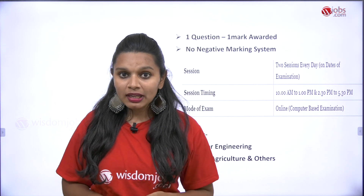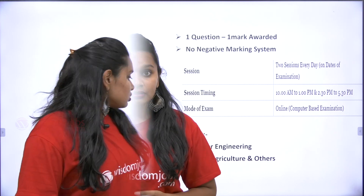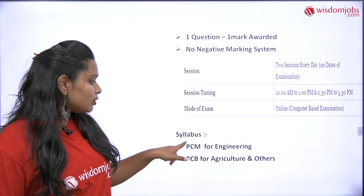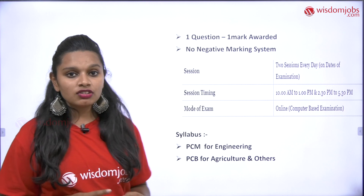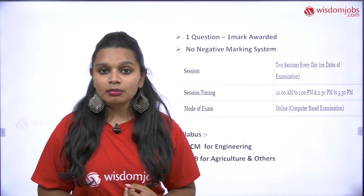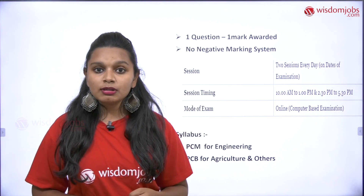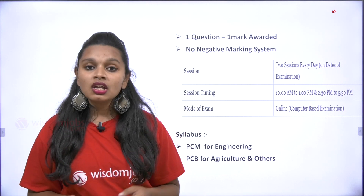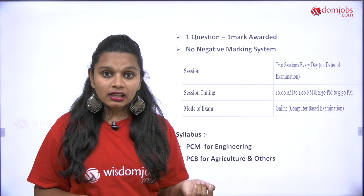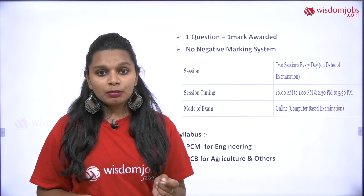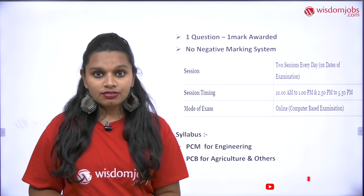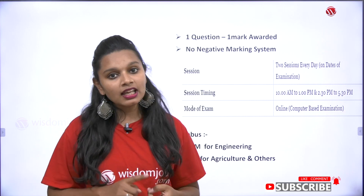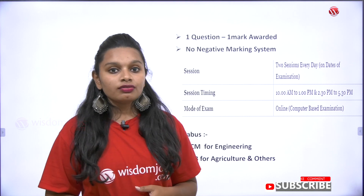The syllabus for engineering is Physics, Chemistry, and Mathematics. The syllabus for agriculture and other courses is Biology, Chemistry, and Physics — where Biology includes both Botany and Zoology.